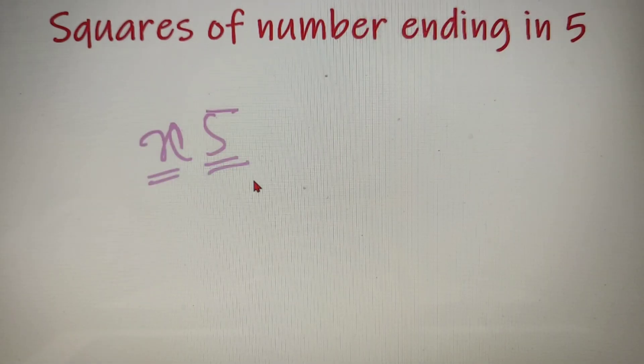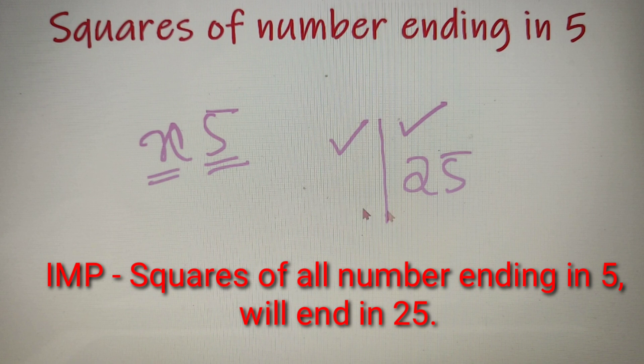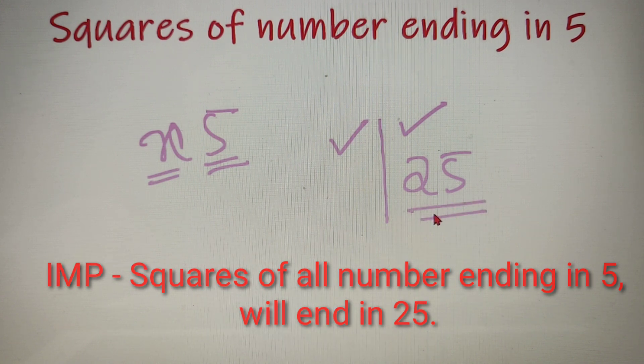Now to calculate the square of this number, we simply divide our answer into two parts. The first part will be written over here and the second part over here. The second part of our answer will always be 25. This is an important fact to note that squares of all numbers ending in 5 will always end in the number 25.